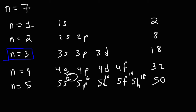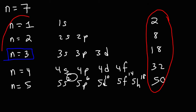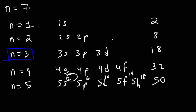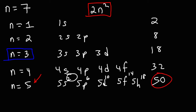What is the relationship between these numbers and their respective n values? Notice that it's always 2n squared. For instance, when n is 3, if you square it you get 9, and 9 times 2 is 18. When n is 5, 5 squared is 25 times 2, you get 50.